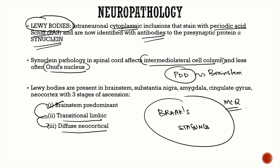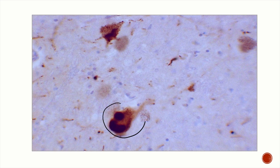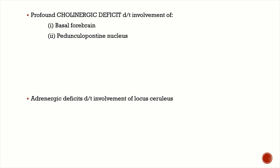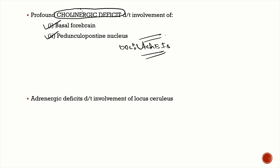The predominant neurotransmitter defect is in dopamine at the substantia nigra, but that is not the only neurotransmitter involved. There is also a profound cholinergic deficit in Lewy body dementia due to involvement of the basal forebrain and pedunculopontine nucleus. That is why the drug of choice for Lewy body dementia is acetylcholinesterase inhibitors. To some degree there are also adrenergic deficits because of involvement of the locus coeruleus.